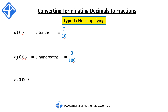Our third example is 0.009. Again, three digits after the decimal point — we'd read this as 9 thousandths, and this is the same as 9 over 1000 as a fraction. Three digits after the decimal point corresponds to three zeros after the one.